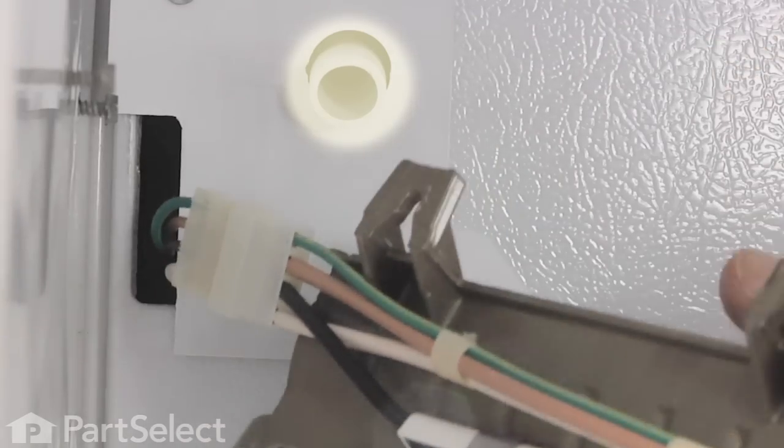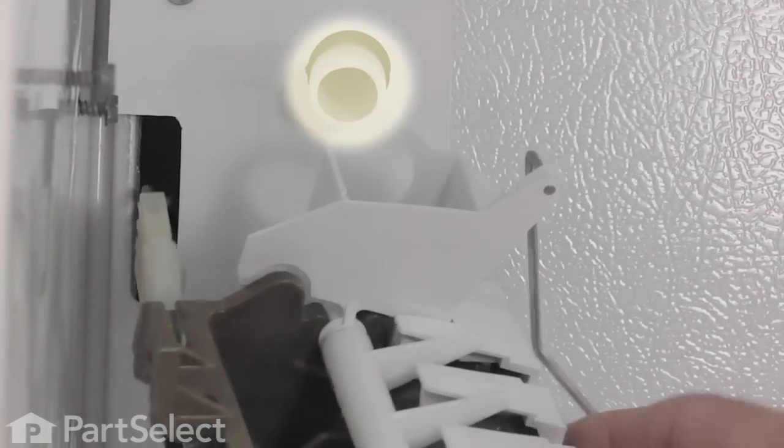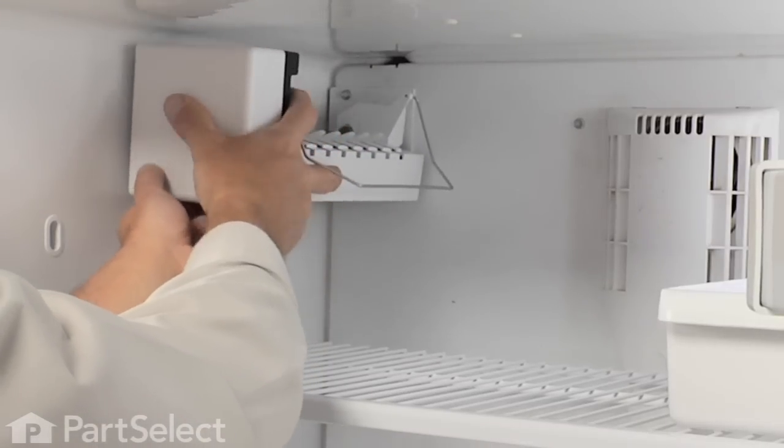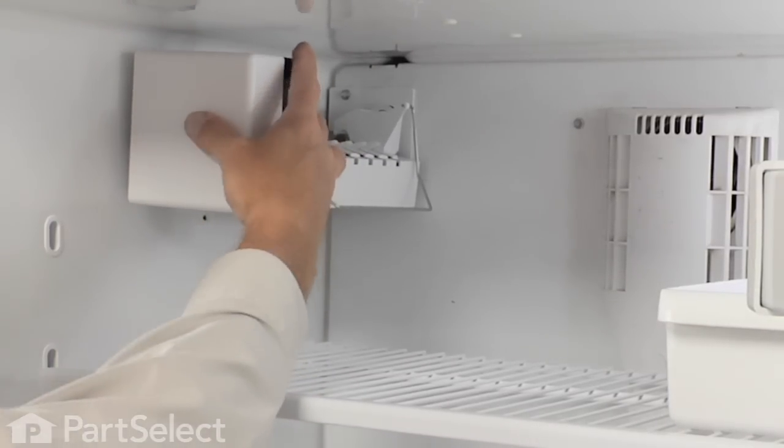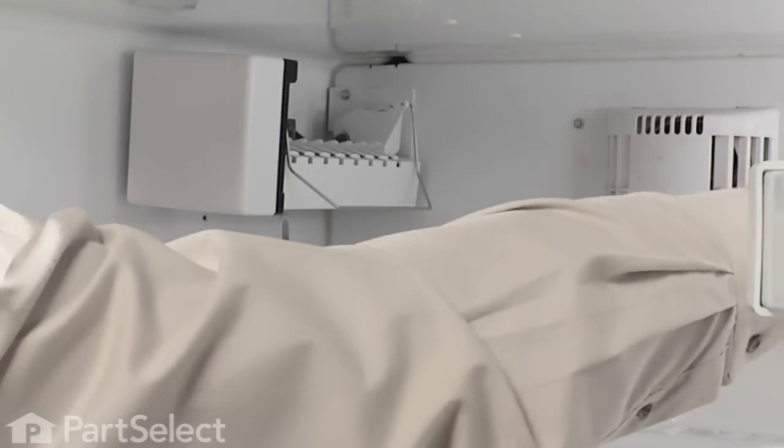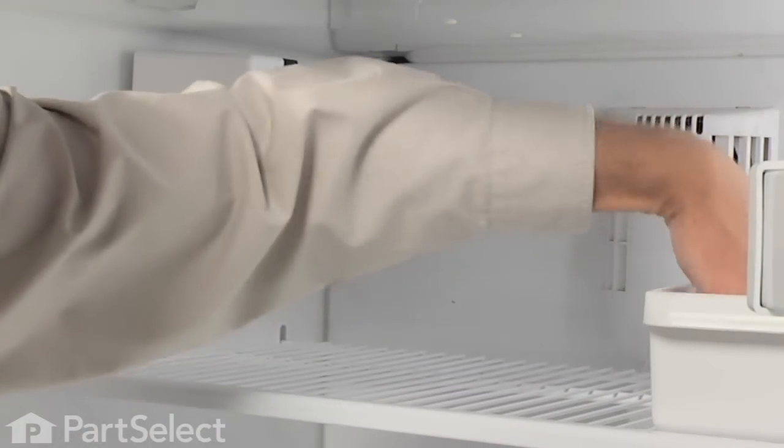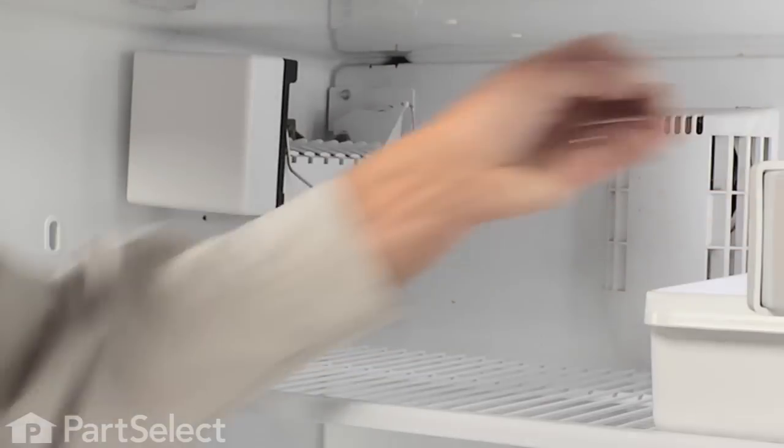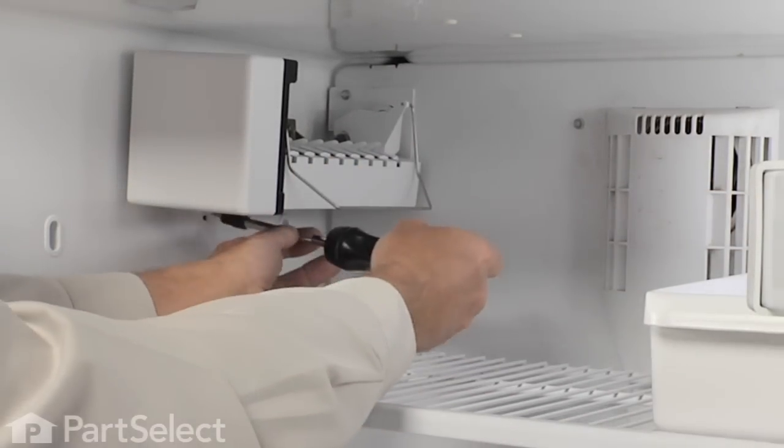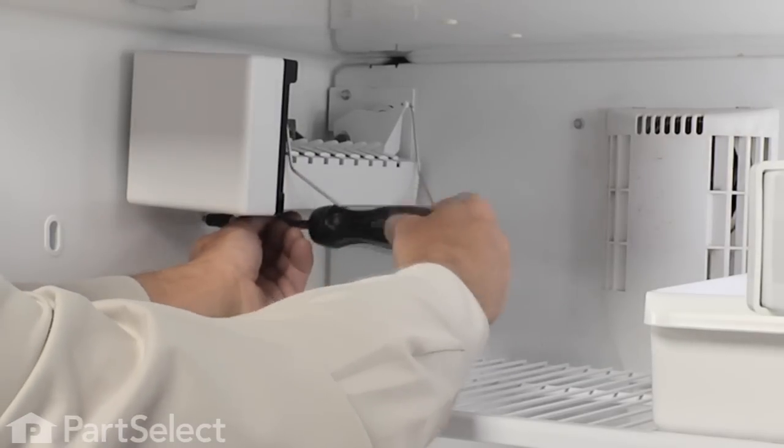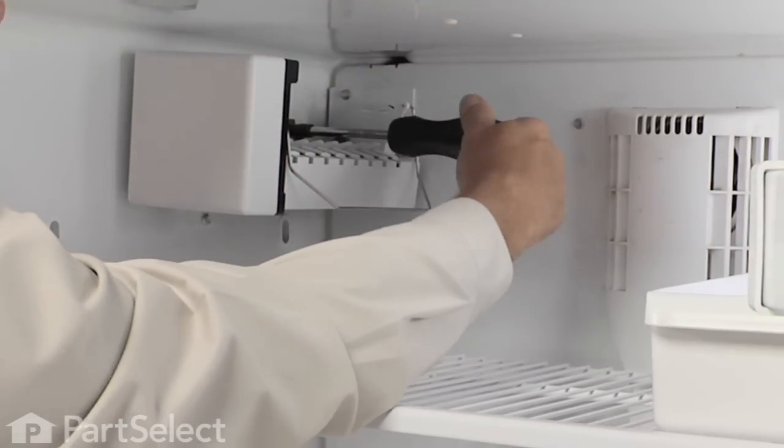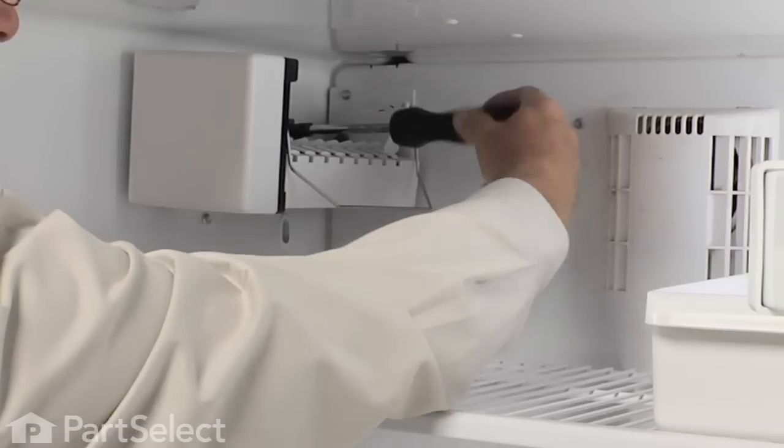Now we need to locate the water fill tube through the hole in the back of the ice maker. Tilt it up onto the mounting brackets. Now we're going to place the quarter inch screw that we secured the bottom with, reinstall that. The ice maker is level, we can retighten all three screws.